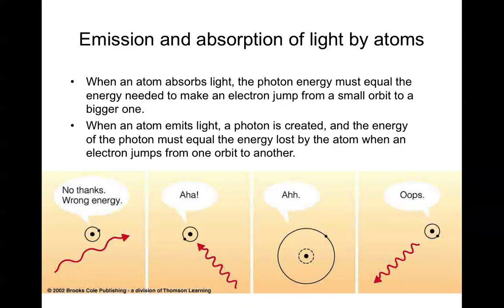For example, in this illustration, if a photon comes along that doesn't correspond to an energy difference between two states of an atom, it just passes right by. But if a photon comes along that matches that energy difference, it can be absorbed by the atom and the atom will make a transition from a lower state to a higher state, to a more excited state.